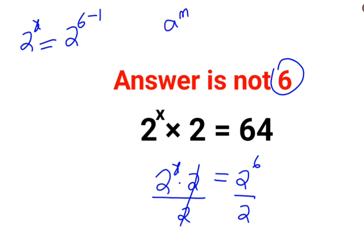Why did I do it? See, a raised to m upon a raised to n, this is the law of indices. When the bases are same, you just have to take the index of the denominator and subtract it from the index of the numerator. So this is what I did.